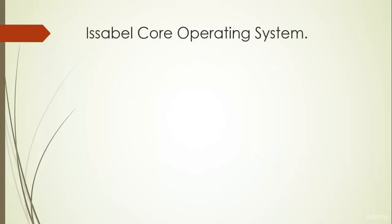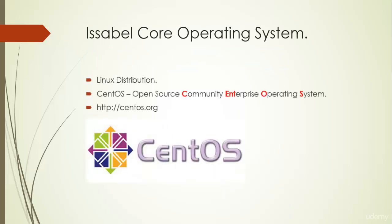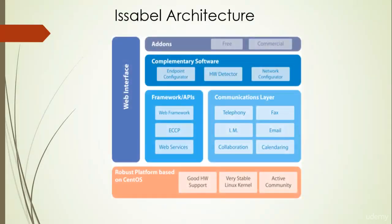The core operating system used by Issabel is based on the Linux distribution called CentOS. You can get more detail about CentOS at centos.org. In this architecture diagram at the bottom, you can see it's an operating system with good hardware support. As mentioned earlier, the core operating system is based on CentOS.